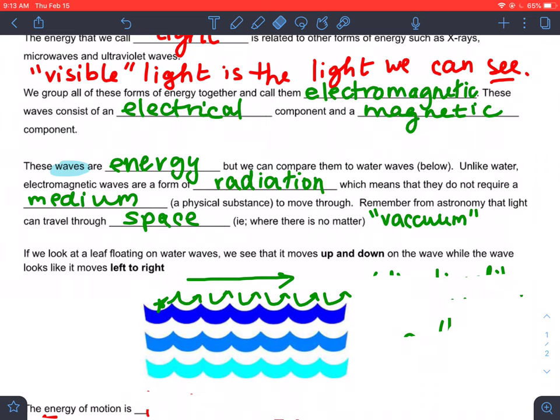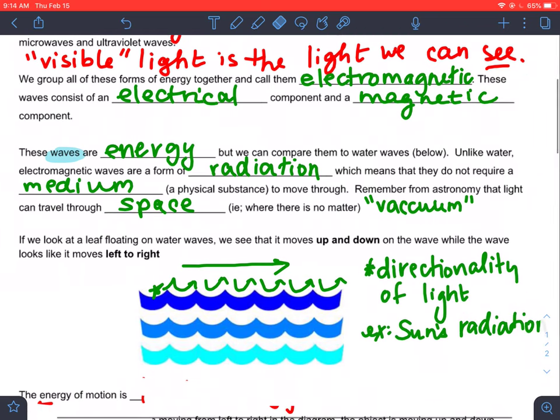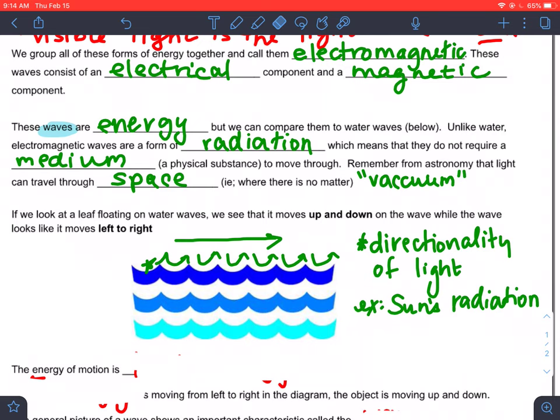As we use this example of a leaf floating on waves, we can see that the movement of the waves kind of determines the direction of that water. Same thing can be said with regards to light. The directionality of light, i.e. the sun's radiation, can be described in terms of which direction the wave is moving.